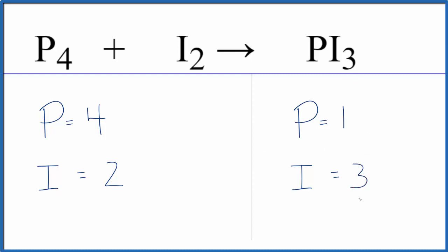Typically when I see this three here, I think I'd like to get that to an even number. So I could put a two here, but one times two, that only gives me two phosphorous atoms. I need four.